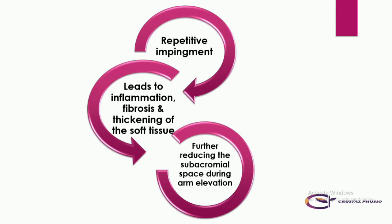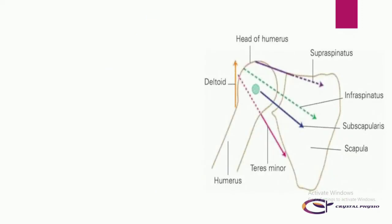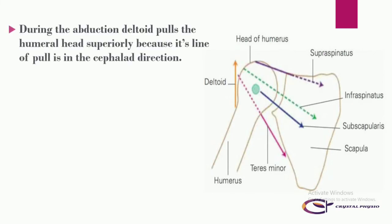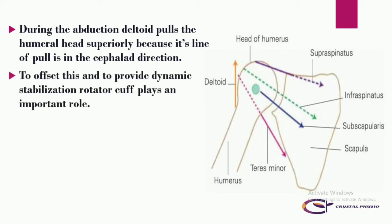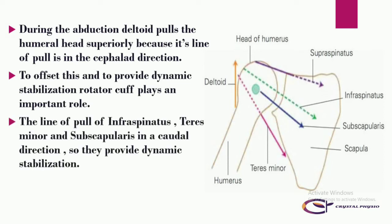During abduction, the deltoid pulls the humeral head superiorly along its line of pull in the cephalad direction. To offset this and provide dynamic stabilization, the rotator cuff plays an important role. The line of pull of the infraspinatus, teres minor, and subscapularis is in a caudal direction, providing dynamic stabilization.